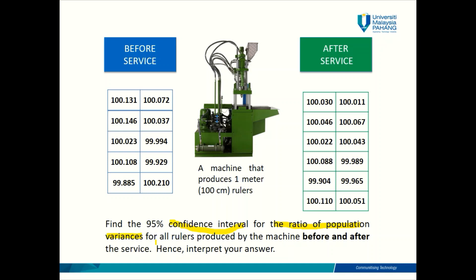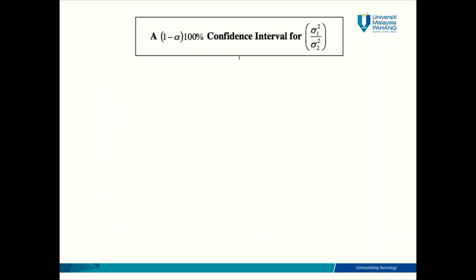Now I need you to open your formula book and find the formula for the confidence interval for the ratio of population variances. In the formula book, you'll be looking at this title here: confidence interval for sigma-squared 1 over sigma-squared 2. Remember, this is a ratio, so it involves two populations, and you'll have two sigma-squares in your notation.